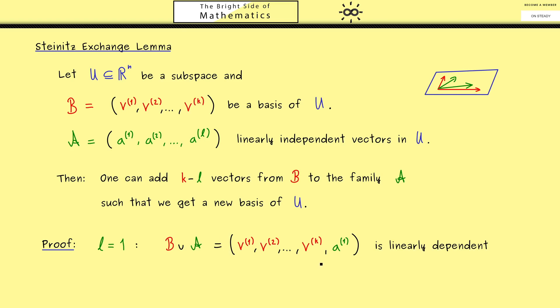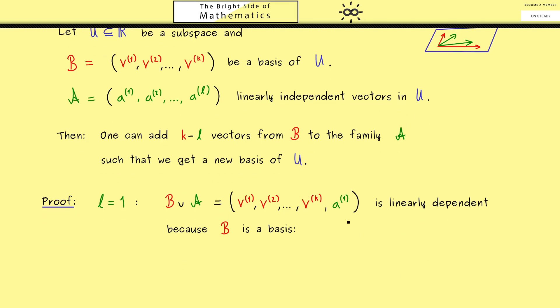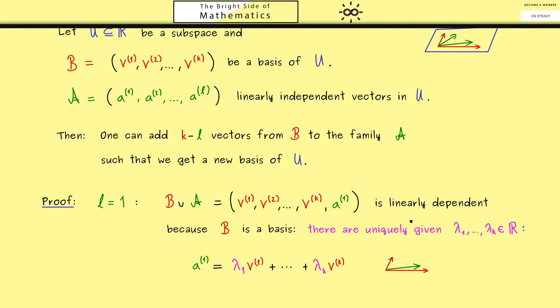And the first fact we can conclude here is that this new family here is linearly dependent. And we should immediately see this because B is already a basis of our subspace U. This means our vector a^(1) can be written as a linear combination of the basis vectors. So we find uniquely given coefficients lambda_1 to lambda_k, such that a^(1) is equal to lambda_1 times v^(1) and so on. Hence you see, a^(1) can be spanned by our k basis vectors here. And of course, this immediately means that our family here is clearly linearly dependent.